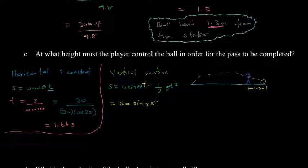So T now is the time it takes for the ball to travel 30 meters so that the player can control it from a height above the ground. So that time was 1.66 seconds. And we're minusing a half G T squared. So half of G is 4.9. So 4.9 times 1.66, we're taking the square of that. So let's simplify.